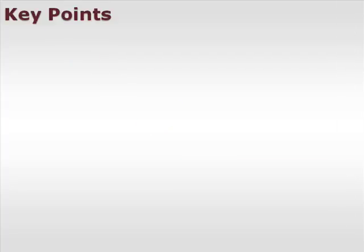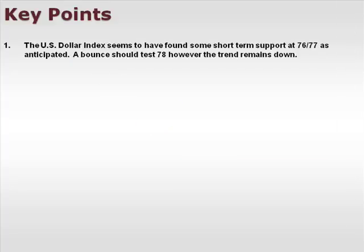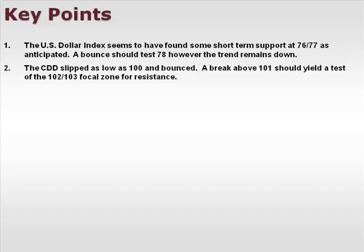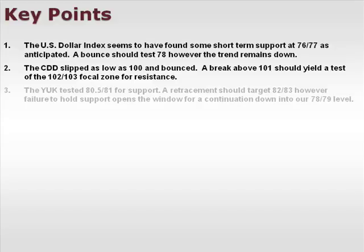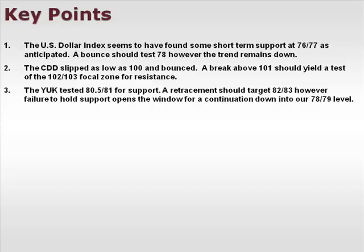Let's take a look at a few of our key points. The U.S. dollar index seems to have found some short-term support at 76-77 as anticipated. A bounce should test 78; however, the trend remains to the downside in the bigger picture. The CDD slipped as low as 100 and bounced — a break above 101 should yield a test of 102-103 for resistance. The YUK tested 80.5-81 for support; a retracement should target 82-83, however failure to hold support opens the window for a continuation down into the 78-79 level.